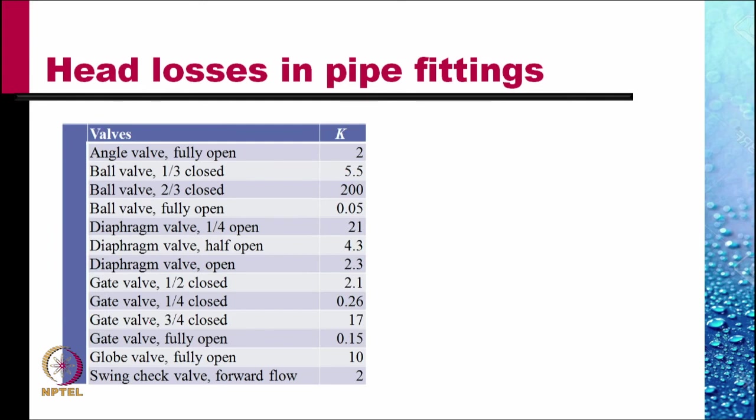Head losses in the valves vary widely depending upon how much closure is there. For example, a ball valve fully open results in a k value of 0.05, but while it is two-thirds closed, the value is as high as 200.